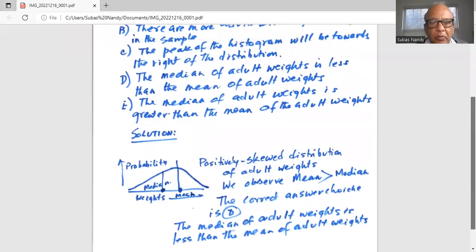So this is a positively skewed distribution. That means it has an extended tail on the right-hand side. On the horizontal axis, you have the weights in pounds. On the vertical axis, you have the probability or relative frequency. In a positively skewed distribution with an extended tail on the right-hand side, the mean is greater than the median.